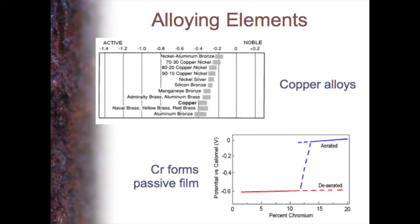Nickel is often considered to be a passive metal, but in fact it is not. Nickel is more inherently corrosion-resistant rather than truly passive. Similarly, cadmium is sometimes classed as a passive metal, but it doesn't inherently form a passive film. Titanium is the one we mainly use as the passive metal.